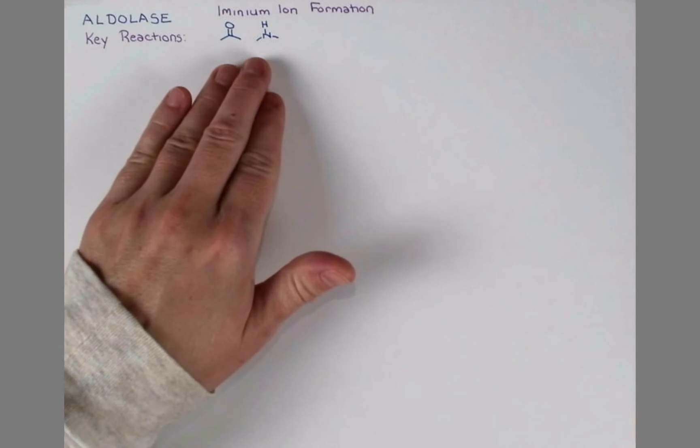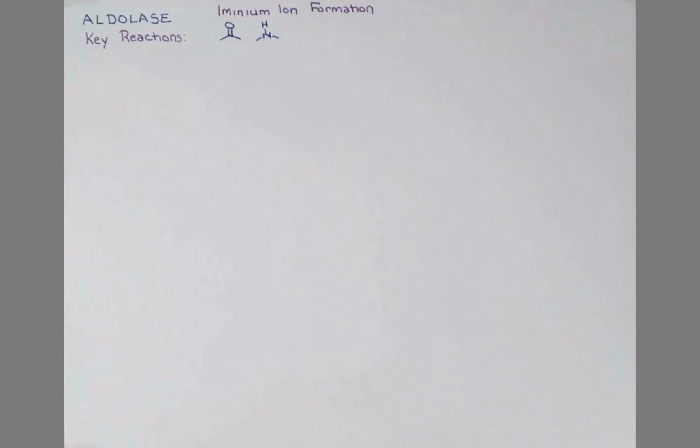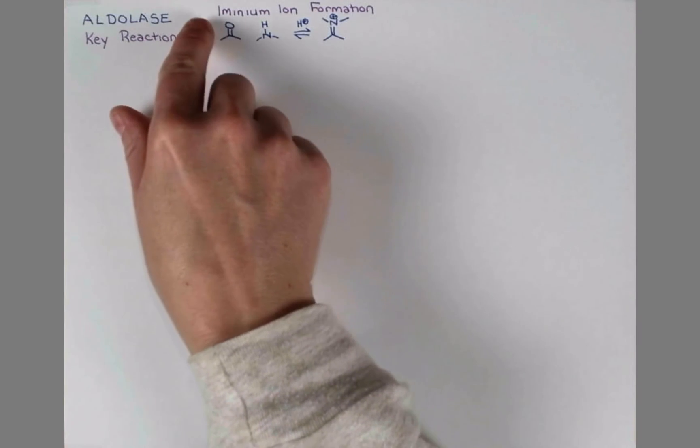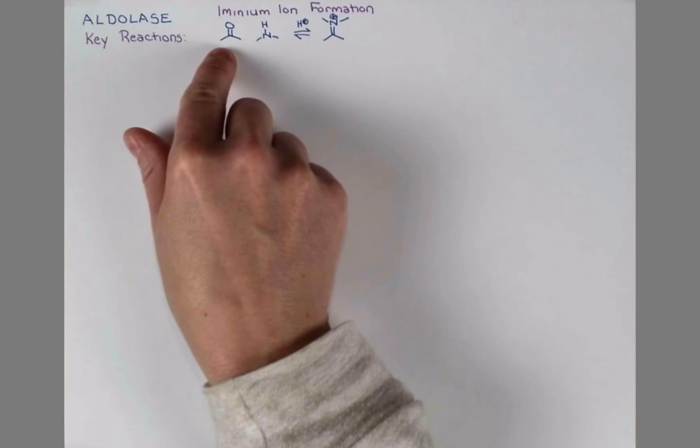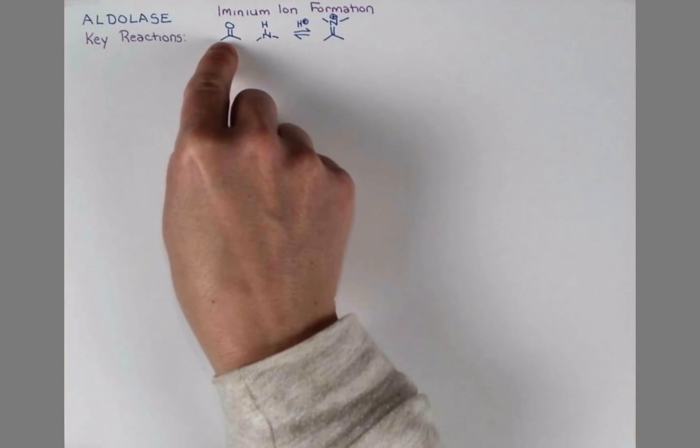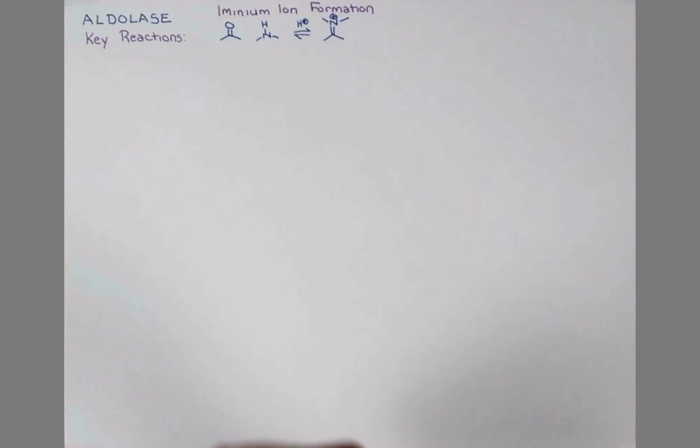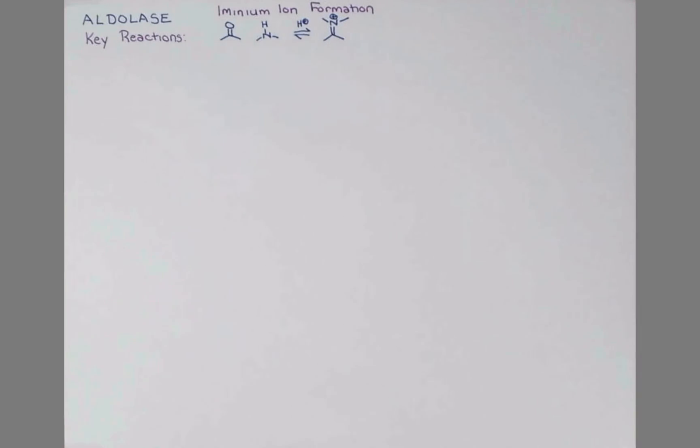The first is iminium ion formation. In this reaction, an aldehyde or ketone reacts with a primary or secondary amine, in this example dimethylamine, typically in the presence of weak acid, to give an iminium ion. The amine attacks this protonated carbonyl, forming a bond, and then dehydration occurs, so we'll lose water in this reaction and form the iminium ion.